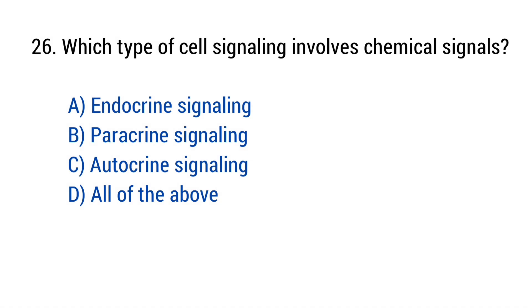Question number 26. Which type of cell signaling involves chemical signals? The right answer is option D: All of the above.